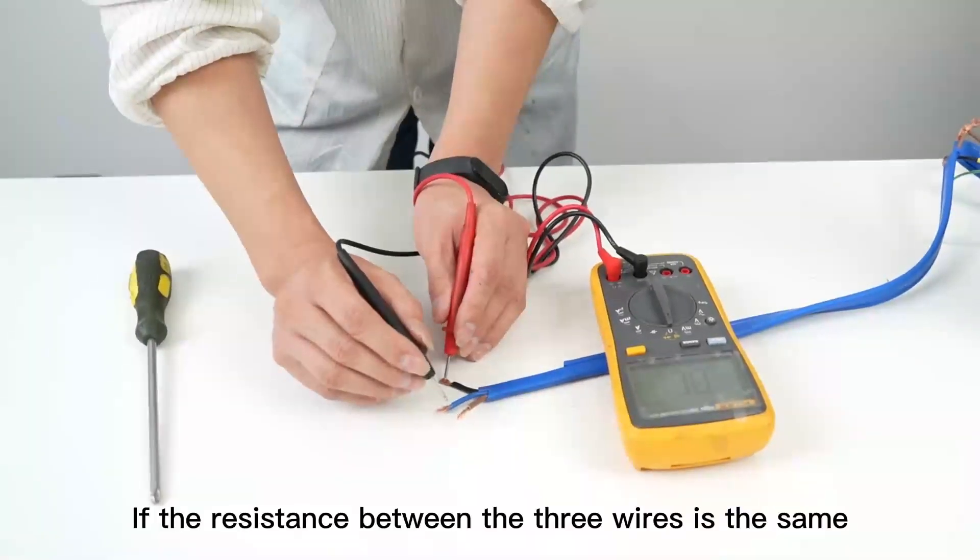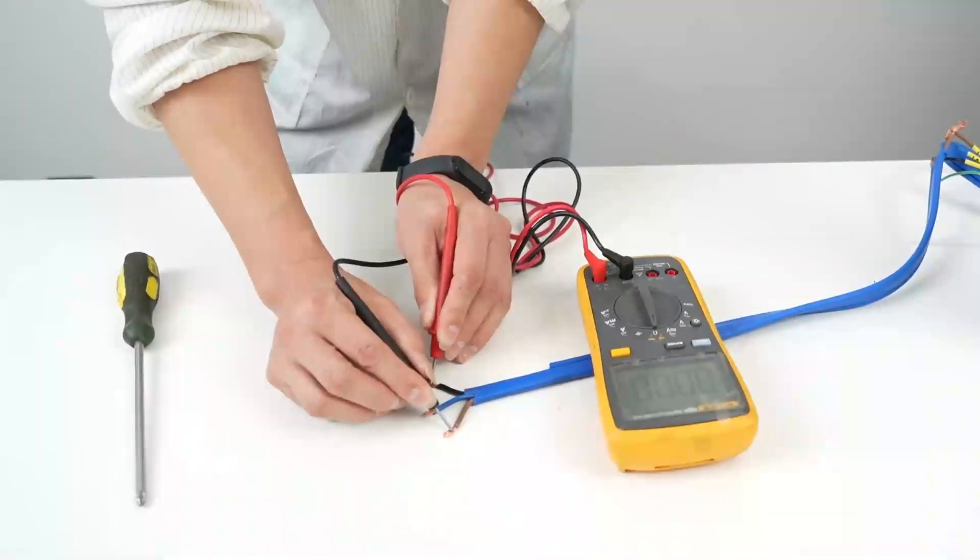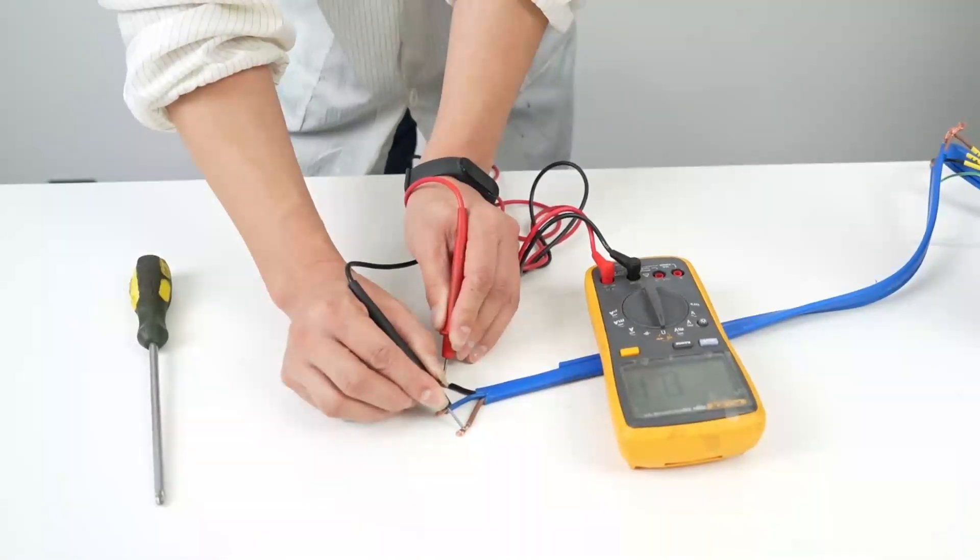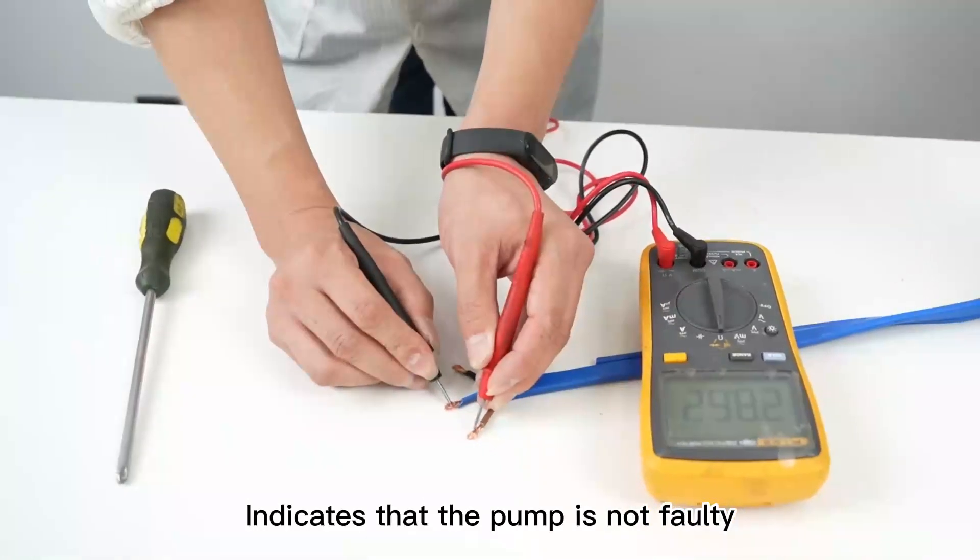If the resistance between the three wires is the same, there is no infinite situation. This indicates that the pump is not faulty.